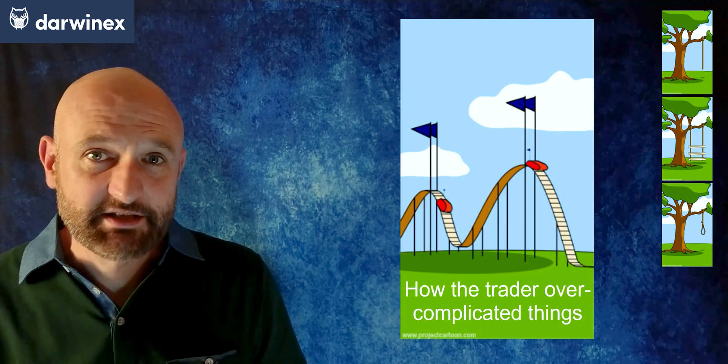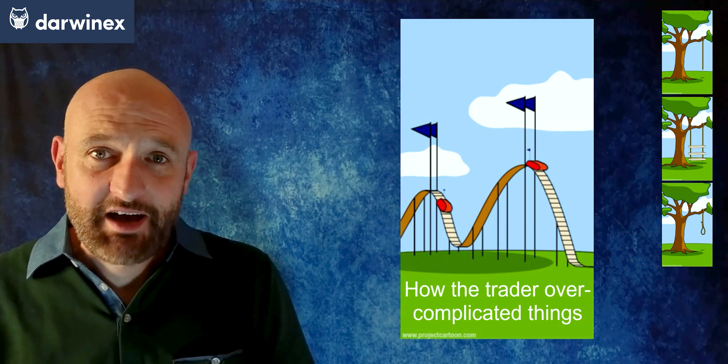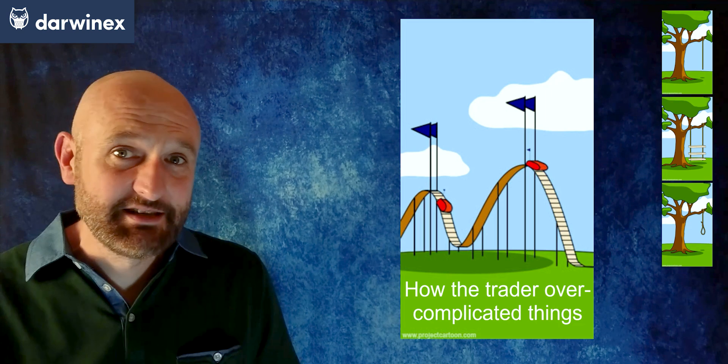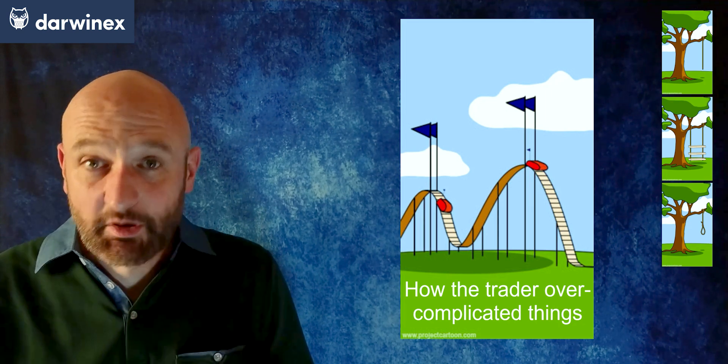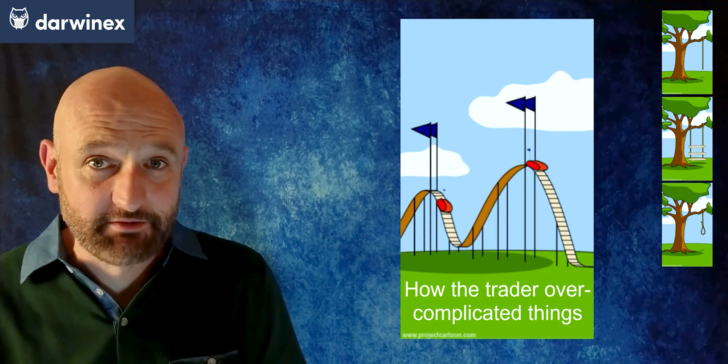It's a lot easier than you think to get an overly complex system. As soon as you have maybe three or four different indicators as part of a system, you've probably overcomplicated things already, in my view.